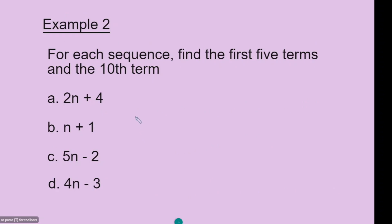In this example, we need to find the first five terms and the tenth term. The first term, n equals 1: 2 times 1 is 2, and 2 plus 4 gives 6. To find the second term, n equals 2: 2 times 2 is 4, and 4 plus 4 gives 8. To find the third number, n equals 3: 2 times 3 is 6, and 6 plus 4 gives 10.